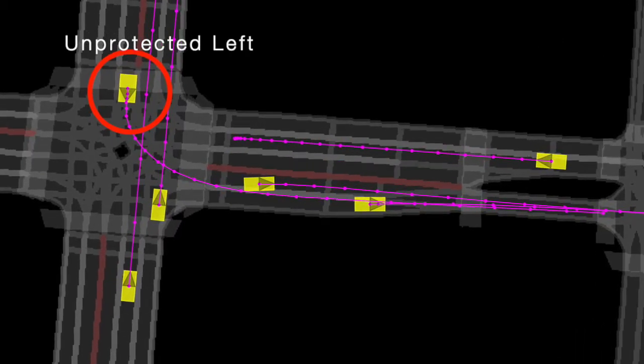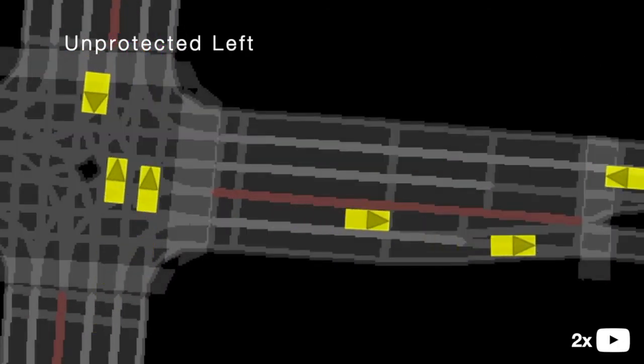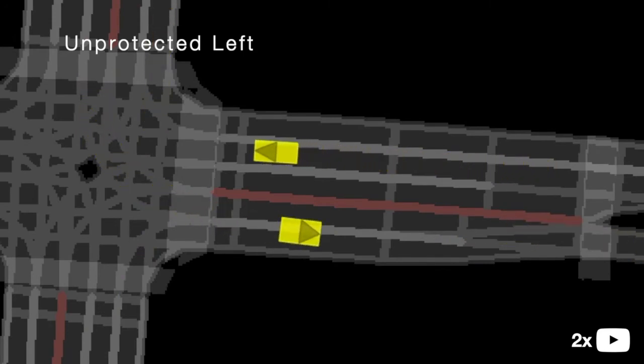In this last scenario, the actor yields for oncoming traffic before performing an unprotected left turn at an intersection.